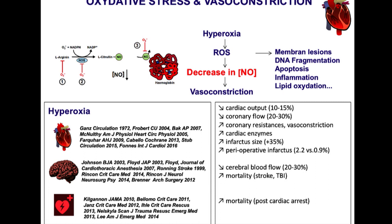There is a large body of evidence suggesting this approach applies to all types of patients — those with myocardial infarction, patients with cerebral ischemia. Evidence clearly shows that hyperoxia decreases cardiac output, decreases coronary flow, and increases infarction size in myocardial infarction. It also increases cerebral infarction size if we do not set SpO2 within the guidelines range.